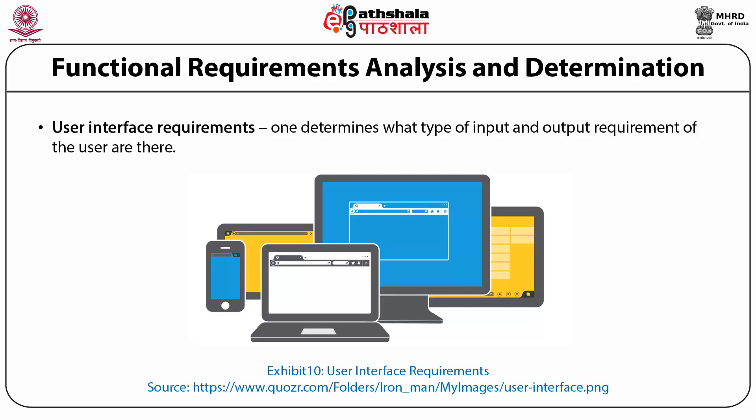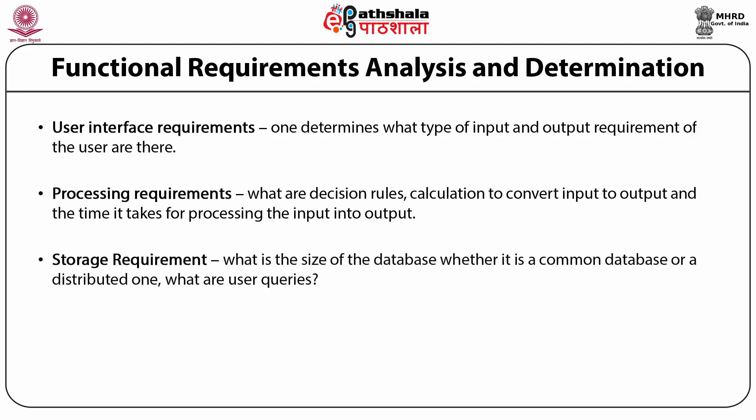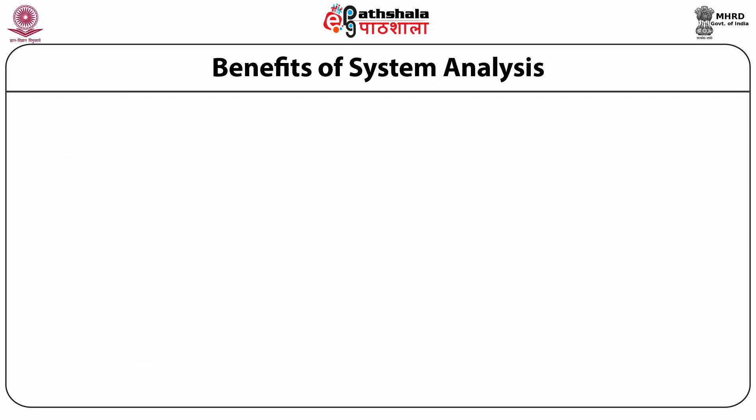The user interface requirements determine what type of input and output requirements the user has, including sources, formats, and content of each input and output media. The processing requirements discuss the decision rules, calculations to convert input to output, and what time it will take for processing. Storage requirements address the size of the database, whether it is a common or distributed database, and user queries. Control requirements cover measures of accuracy, validity, safety, security, and adaptability requirements for the system's input, process, output, and storage functions.